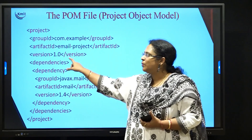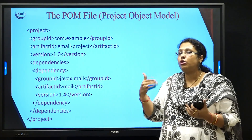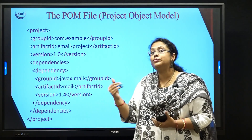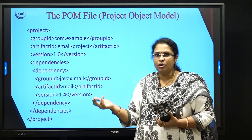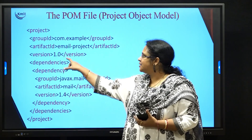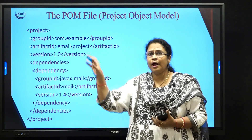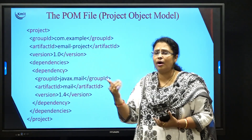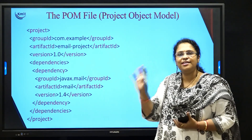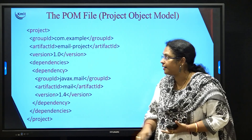The next one is version. As we keep on doing changes in the project we release them into the market as various versions, and which is the current version of the project is written under the tag called version. All these are not written by the developer — they are automatically generated by your Maven build tool.